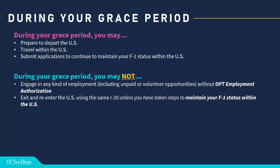Some points about what you cannot do during your grace period: you cannot work. You may not engage in any kind of employment — this includes unpaid or volunteer opportunities or continuing any on-campus position that you might hold unless you have received approval for OPT. You may also not leave the U.S. during the grace period and come back using your current I-20 unless you've taken steps to maintain your status.